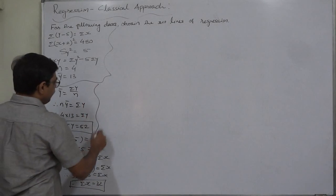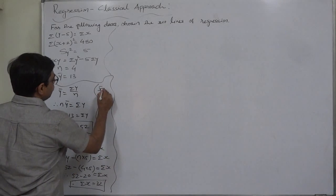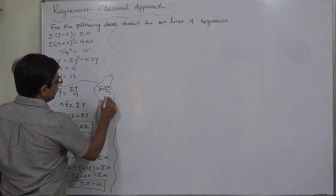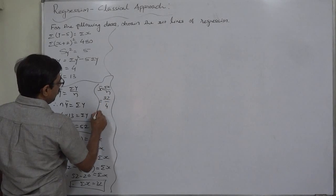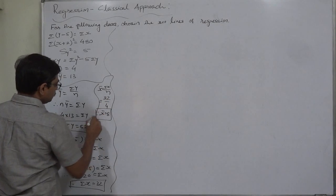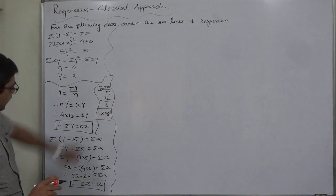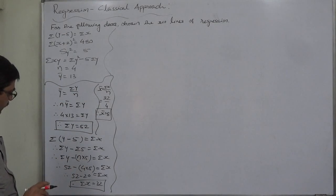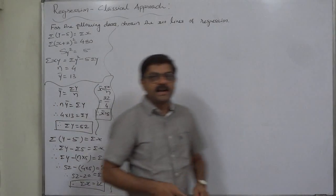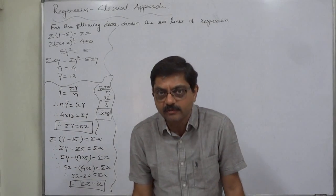From σx = 32 and n = 4, we get x̄ = 32 / 4 = 8. So now we have ȳ, x̄, σx, and σy. We still need to find σxy, σx², and σy² from the remaining information.